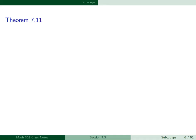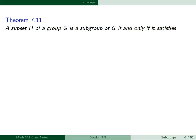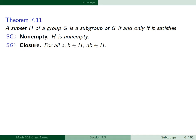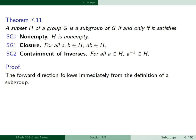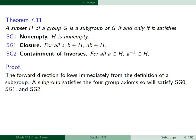This is Theorem 7.11. A subset H of a group G is a subgroup of G if and only if it satisfies three conditions: SG0, non-empty, which says H is non-empty; SG1, closure, for all A, B in H, A times B is in H; and SG2, containment of inverses, for all elements A in H, the inverse A-inverse belongs to H.